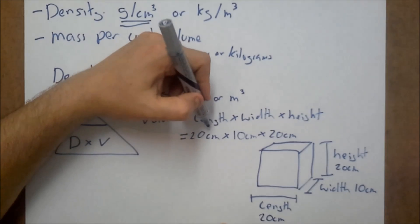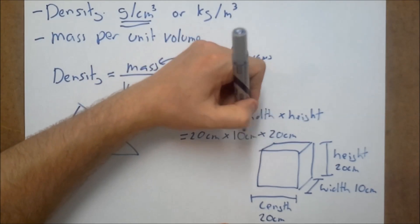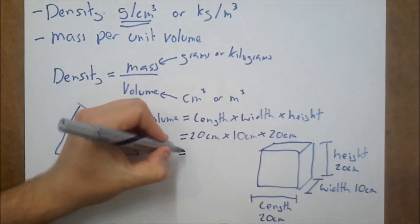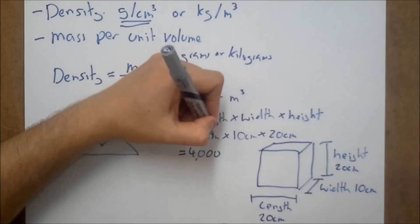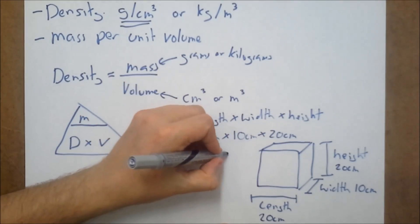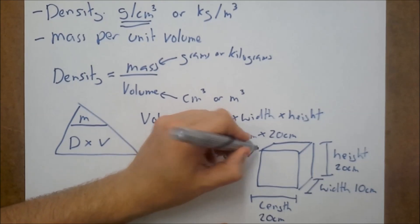So 20 times 10 times 20. 20 times 20 is 400. 400 times 10 is 4000. And as we've been using centimeters, and we've multiplied it three times, we end up with centimeters cubed. Great, that's our volume.